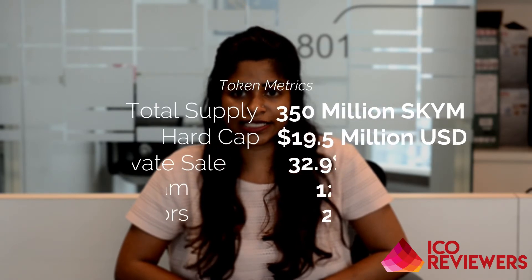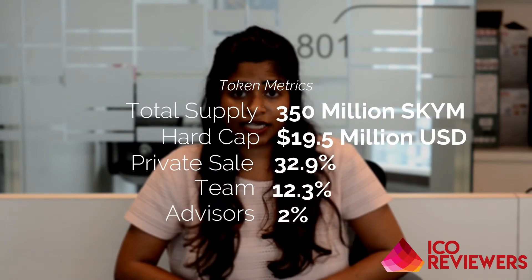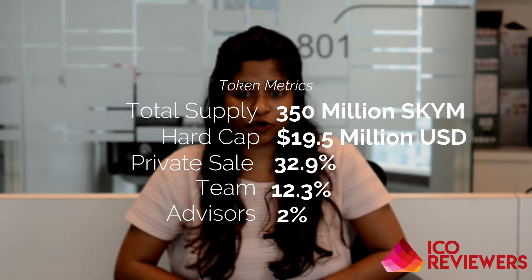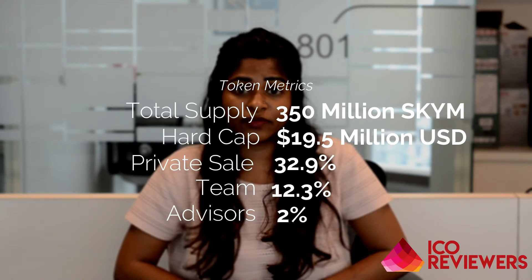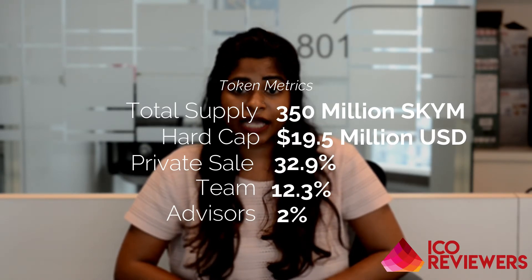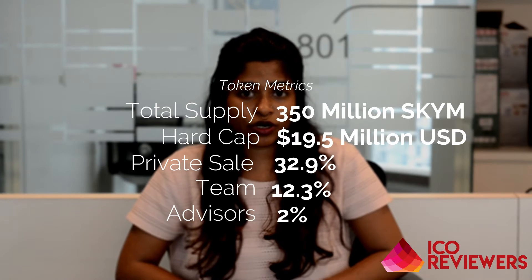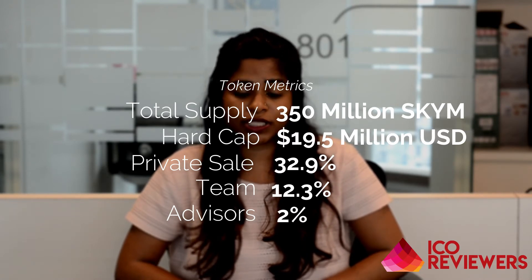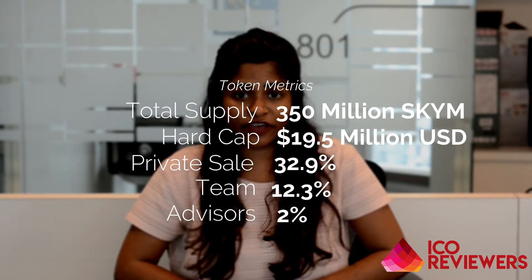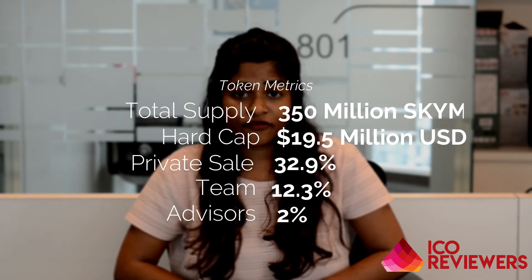Now let's talk about the token metrics. The tokens are known as SKYM. The total supply of tokens is 350 million SKYM and the hard cap of this project is 19.5 million US dollars. In terms of token distribution, 32.9 percent of the tokens are up for private sale, 12.3 percent has been kept for the team, and 2 percent for the advisors.